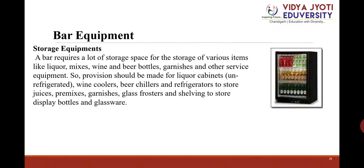Storage equipment: A bar requires a lot of storage space for various items like liquor, mixes, wine and beer bottles, garnishes, and other services. Provision should be made for a liquor cabinet (unrefrigerated), wine coolers, beer chillers, refrigerators to store juices, premixes, and garnishes, as well as glass frosters and shelving to store display bottles and glassware.